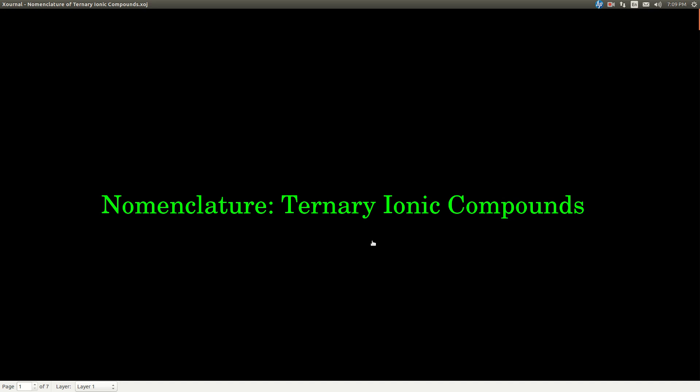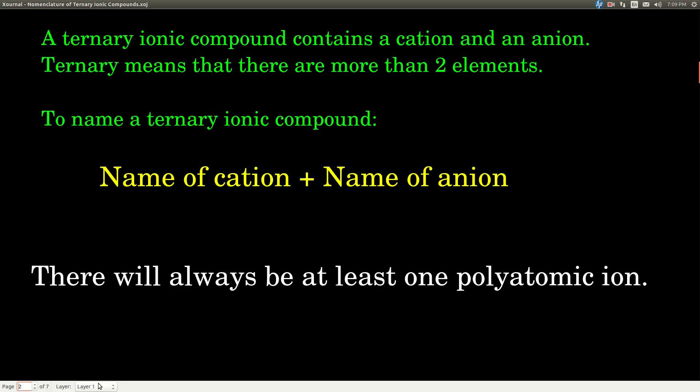In this video, we're talking about the nomenclature of ternary ionic compounds. So what does ternary mean? It just means that there's more than two elements in the compound. Remember, a binary ionic compound has two and only two elements. Ternary just means that there's more than two elements in there.